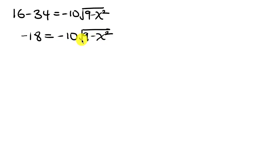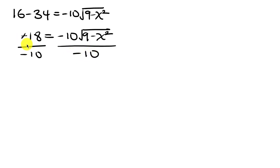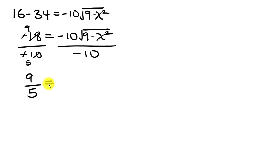Now let's divide both sides by negative 10. The negatives cancel out, and since 2 divides both 18 and 10, we get 9 over 5 on the left equal to the square root of (9 minus x squared).